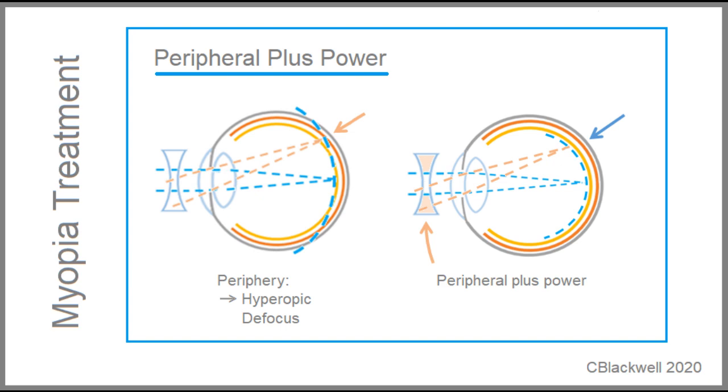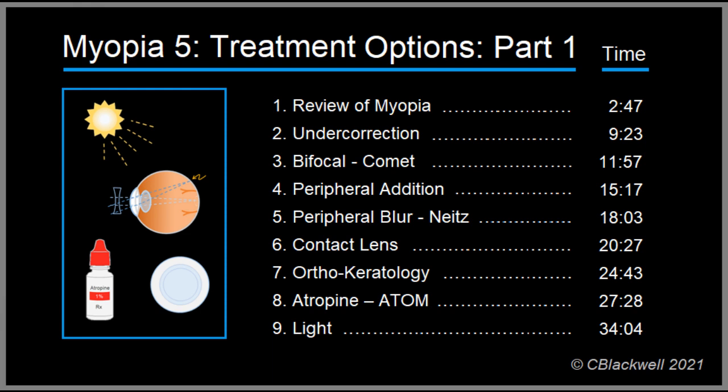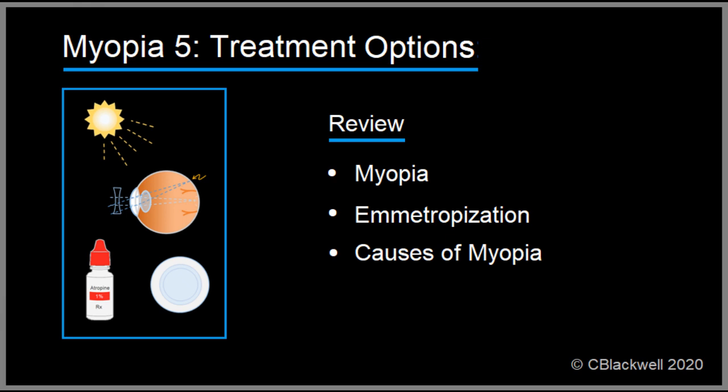For each method we start by explaining the strategy behind it. Then we have chosen a representative sample of trials, usually two per method, to see how well that method works. You can browse through the methods, or at any point, skip ahead to the summary of results section. As with the other videos, we begin with a summary of what myopia is, how emetropization works, and causes of myopia. These are all important to understand because the treatment methods are based on them. If you have seen the other videos, you can skip ahead to causes of myopia as a good introduction to the treatment options.